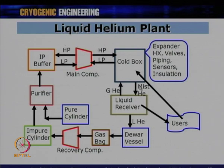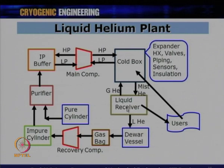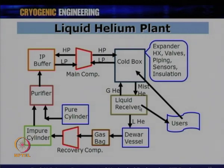The liquid helium plant schematic shows a cold box which houses expanders, heat exchangers, piping, sensors, and insulation. High-pressure gas from the compressor enters the cold box, liquid is produced and goes to the liquid receiver, while the remaining gas returns at low pressure continuing the cycle. The liquid helium produced is used directly by users at the site, or transferred to dewar vessels taken to different laboratories.